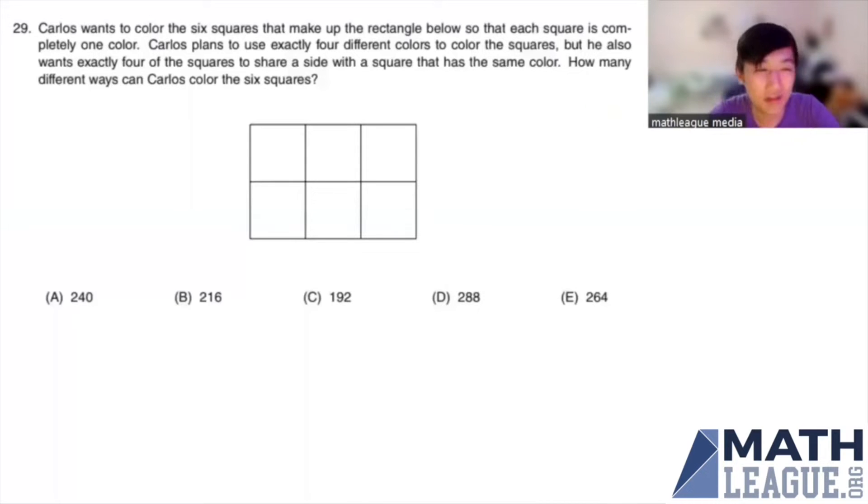Okay, so today I'm going to go over Sprint number 29 from test 12226. The question reads: Carlos wants to color the six squares that make up the rectangle below so that each square is completely one color. Carlos plans to use exactly four different colors to color the squares, but he also wants exactly four of the squares to share a side with a square that has the same color.